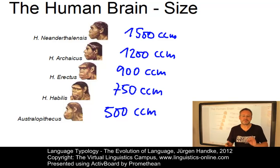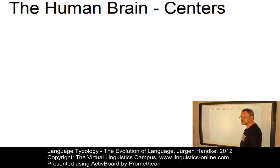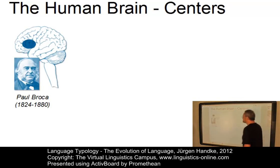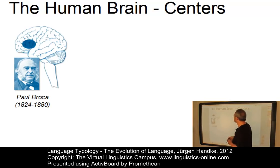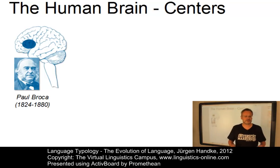Thus, we shouldn't solely examine the size, but rather the structure of the brain. It is known that three brain centers are primarily responsible for the production and comprehension of speech. The first of these centers is referred to as Broca's area. It can be found in the front of the left hemisphere of the cortex, and was named after the French physiologist Paul Broca, who lived in the 19th century. It is commonly known as the motor center for speech.